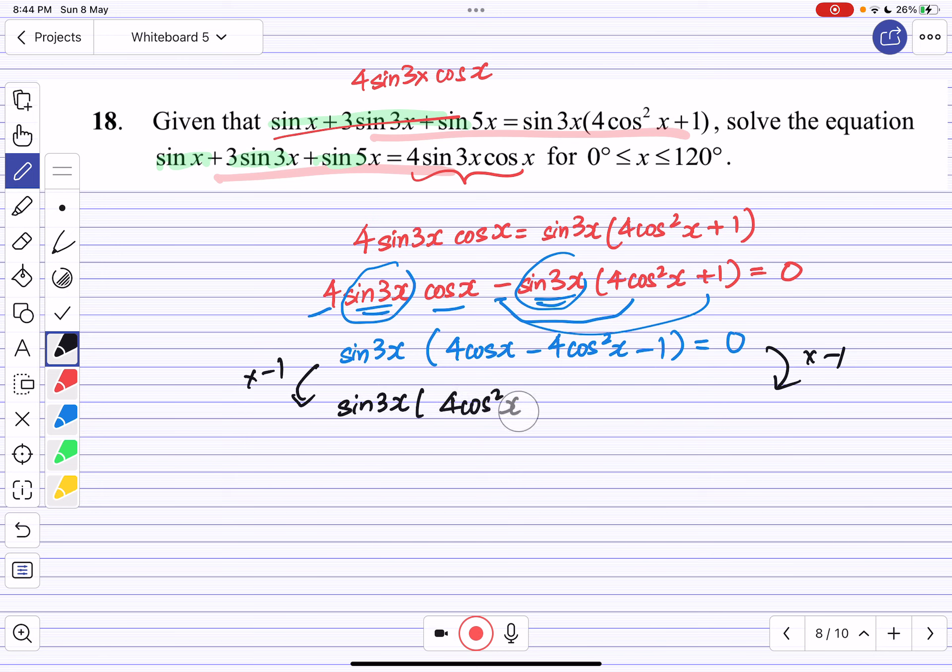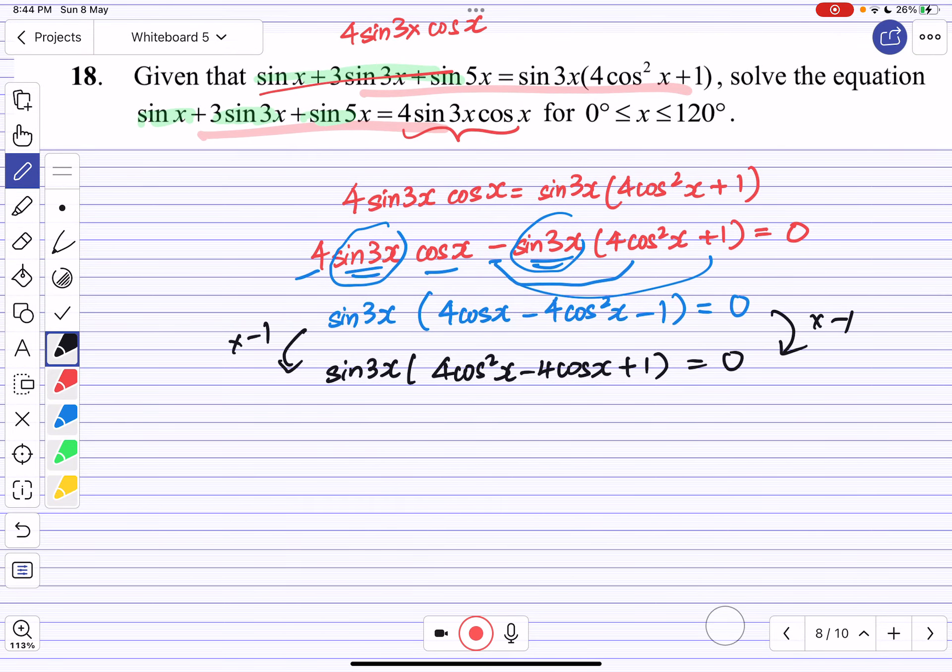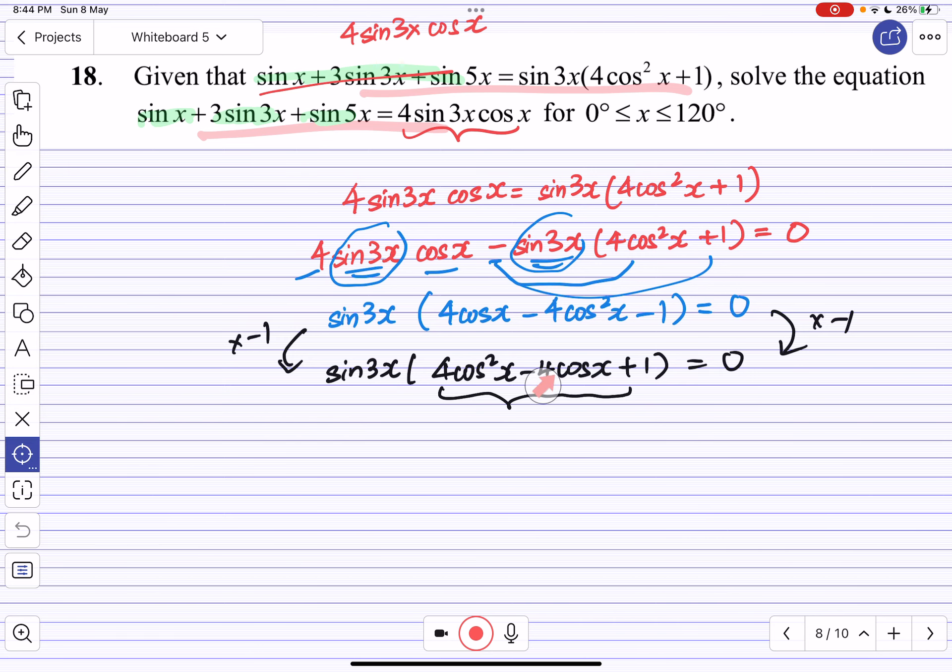This is a beautiful square algebra identity: a² - 2ab + b². Factorizing this gives us (a - b)² = 0, so sin 3x(2cos x - 1)² = 0.